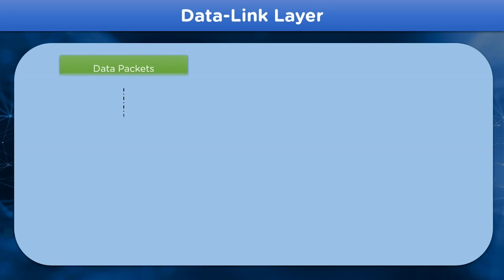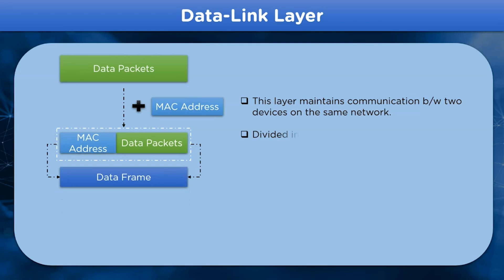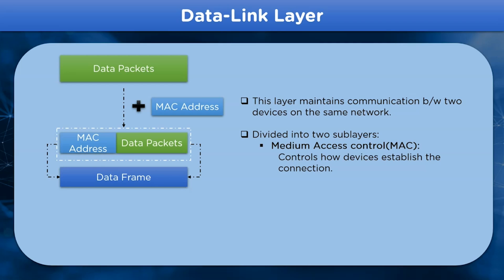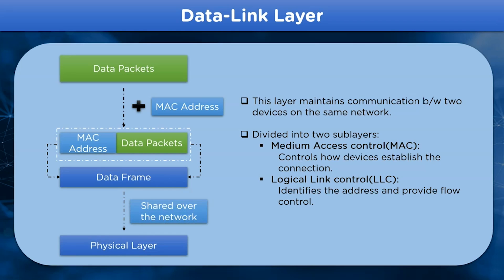The next layer in the OSI model is the Data link layer. This layer is responsible for maintaining and terminating the established connection between devices over the network. The MAC address is added to the data packets, which are collectively known as data frames, and these frames are further transmitted to the physical network. The Data link layer is divided into two sub-layers: Medium Access Control (MAC), which controls the established connection, and Logical Link Control (LLC), which identifies the address and provides flow control for the data. The data frame is then transferred to the Physical layer.